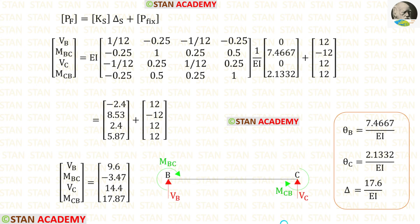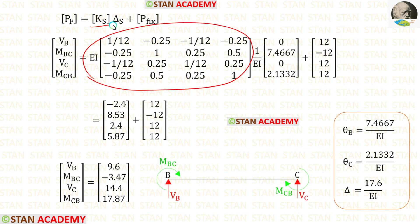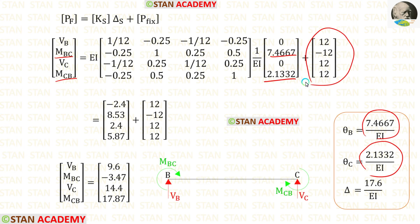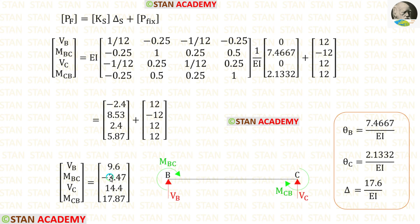Now let us find the moments and vertical reactions in beam BC. We apply the element stiffness matrix for beam BC. In the displacement matrix, we apply the value of θB for MBC and the value of θC for MCB. We also apply the fixed end reactions and moments. After the calculation, we obtain the reactions and moments.